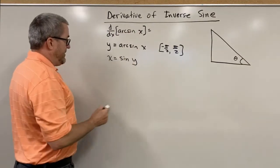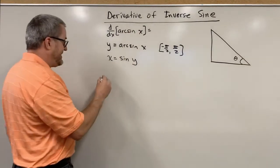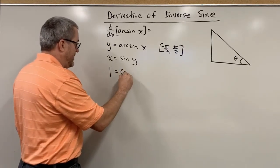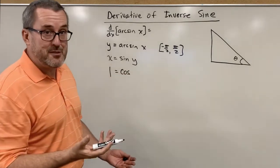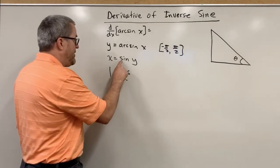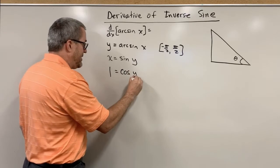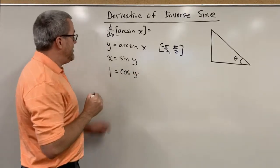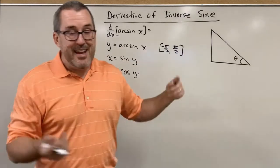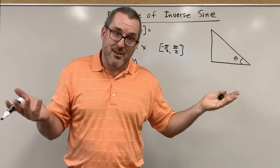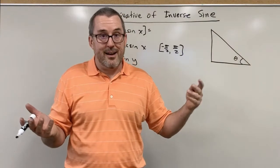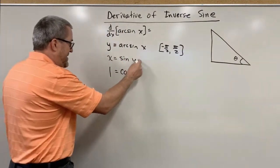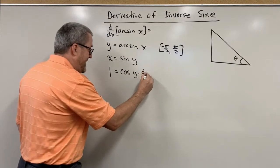So the derivative of x with respect to x is 1. The derivative of sine is cosine. Now we'll have to use our implicit differentiation, our chain rule. The derivative of sine of y is cosine of y, but then we'll need to take the derivative of y. Now remember, y is the arc sine of x. If I knew how to take the derivative of the arc sine of x, the derivative of y, I wouldn't need this video. But since I don't, I'm going to say the derivative of y is just something. It's dy dx.